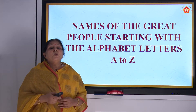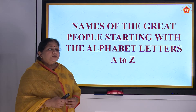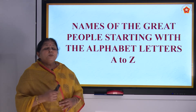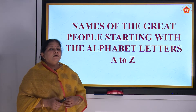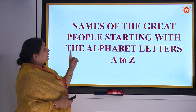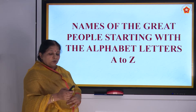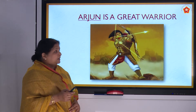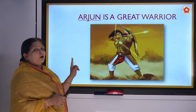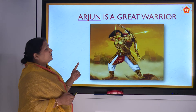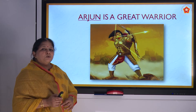Now we are going to see a very interesting topic — names of great people starting with the alphabet letters A to Z. A for Arjun — Arjun is a great warrior whom Krishna told the Bhagavad Gita. B — Balaram is the brother of Krishna.